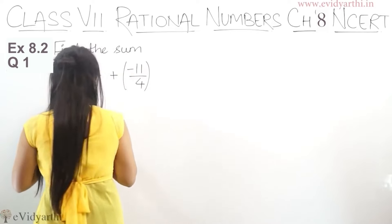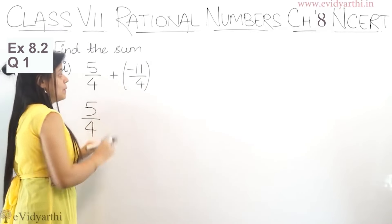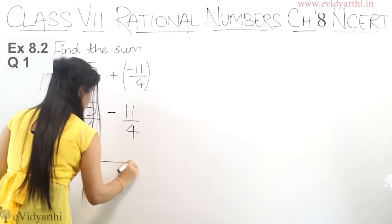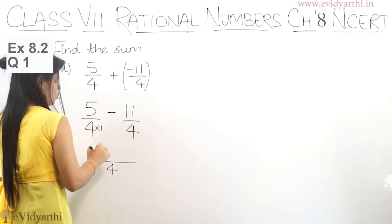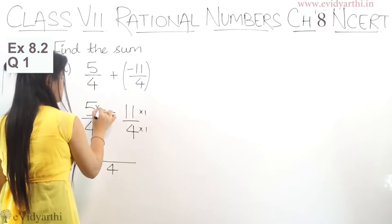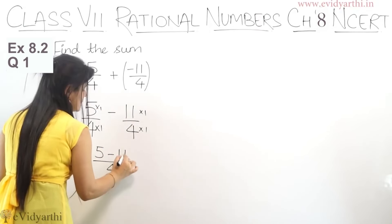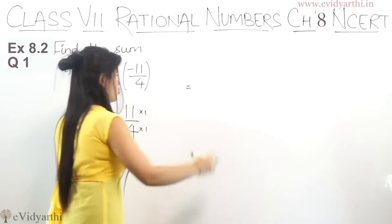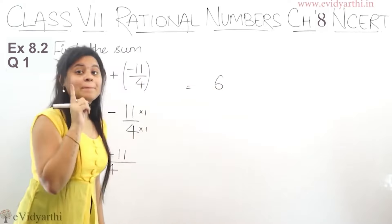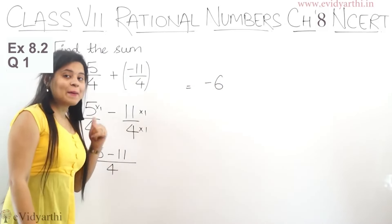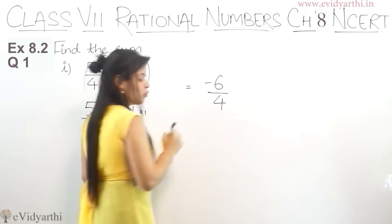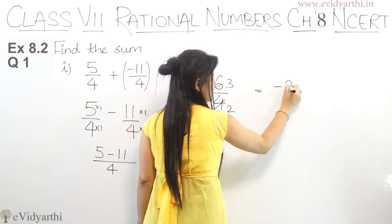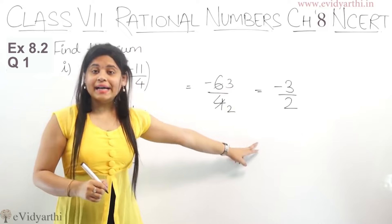The first part is very simple. We have 5 upon 4 plus minus 11 upon 4. Since denominators are the same, it becomes 5 minus 11 over 4. Now 5 minus 11 — the bigger number is 11 and it has a minus sign, so this gives minus 6 upon 4. We can simplify further since both are in the 2 times table: minus 3 upon 2. So the answer is minus 3 upon 2.